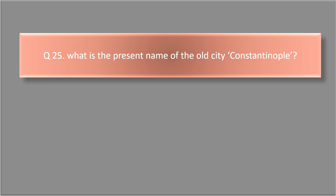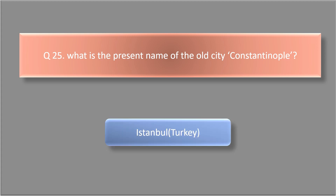What is the present name of the old city Constantinople? The answer is Istanbul.